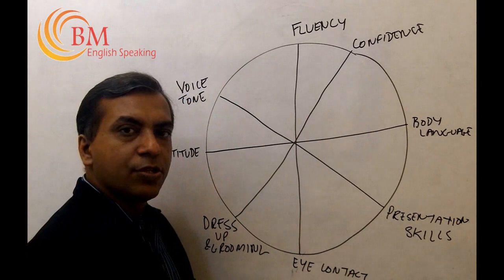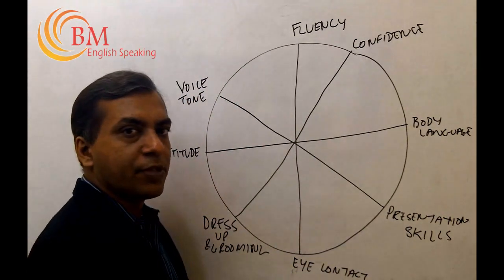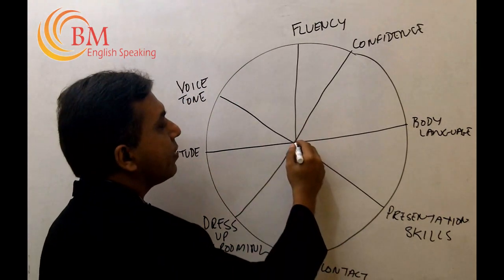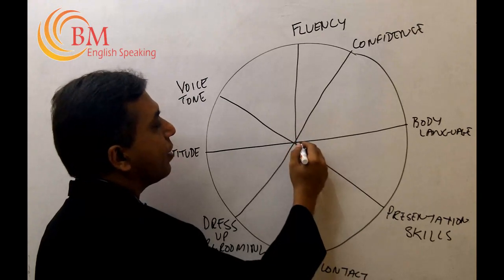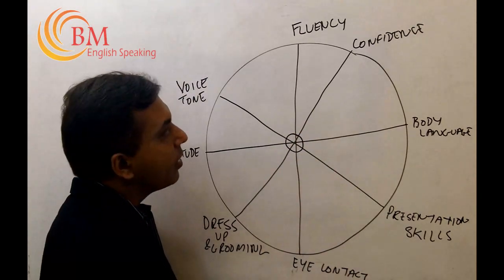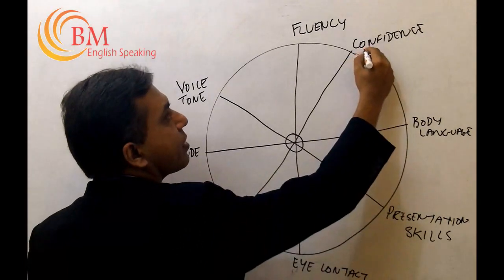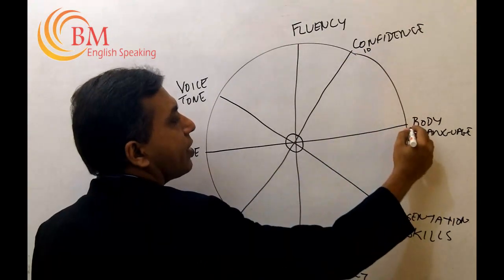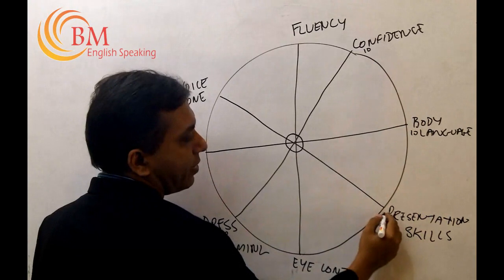Once you name these eight points, assume that the center point of the circle is zero and ten is the rating at the intersection of the circle and the radius.